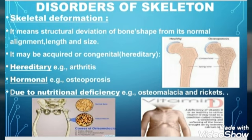Skeletal deformation may be acquired, which a person gets during their lifetime, or it may be congenital, which a person gets by birth. Congenital is also known as hereditary. So what are the different skeletal disorders which are examples of acquired and hereditary skeletal deformation?